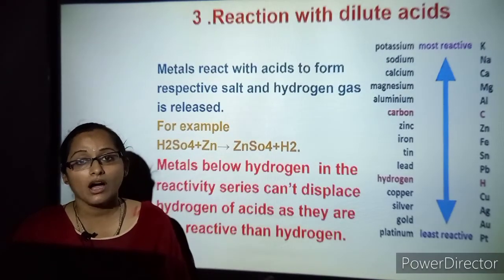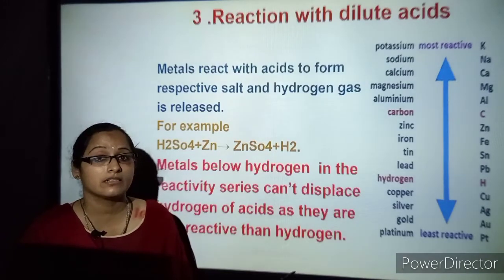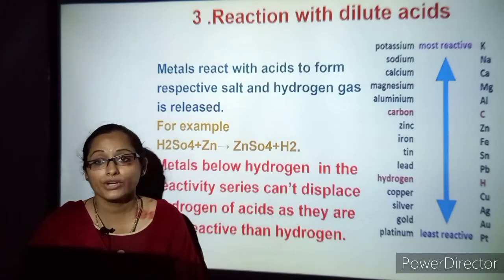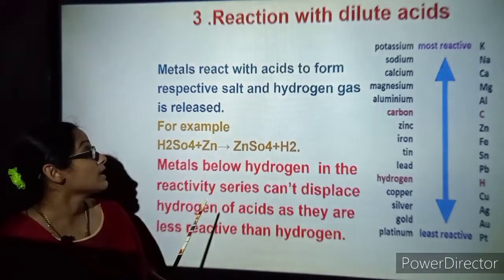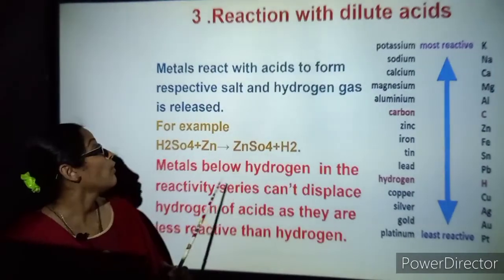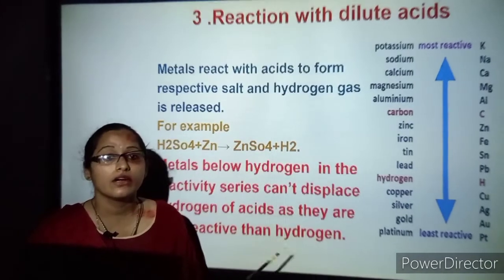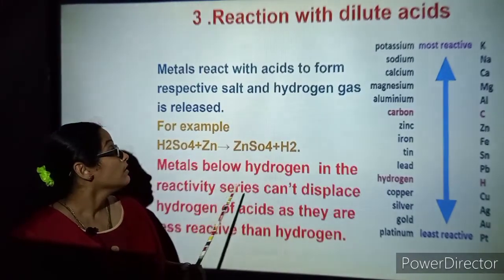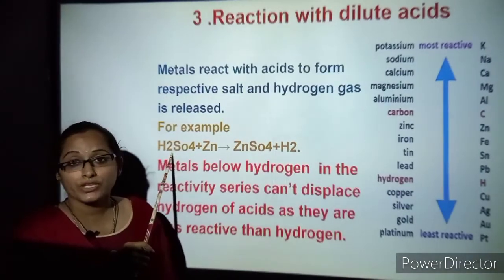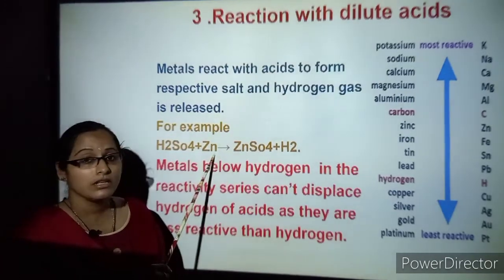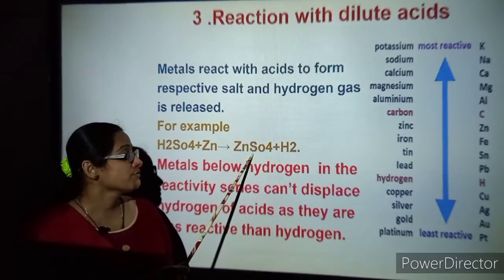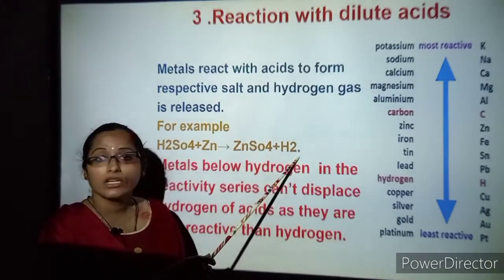Now we will see how metals react with dilute acids — like sulfuric acid, hydrochloric acid, and nitric acid. Metals react with acid to form their respective salt and hydrogen gas. For example, sulfuric acid (H₂SO₄) when reacted with zinc — a metal — undergoes a single displacement reaction to form zinc sulfate (ZnSO₄) and release of hydrogen gas.